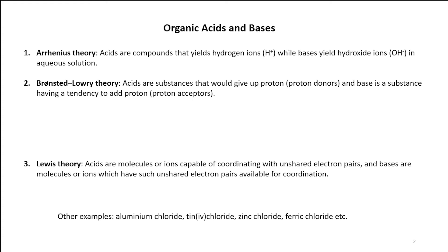That is why later on Brønsted and Lowry, two different scientists, came up almost at the same time in 1923. They defined acids as substances that give up a proton — these are proton donors — and a base is a substance having a tendency to accept a proton. In their theory there are two components: an H⁺ donor and a proton acceptor. When they interact they lead to a conjugate acid and conjugate base. For example, H₂SO₄ and water — water acts as a base, H₂SO₄ gives up the proton, forming H₃O⁺ and HSO₄⁻ as the conjugate acid and conjugate base.